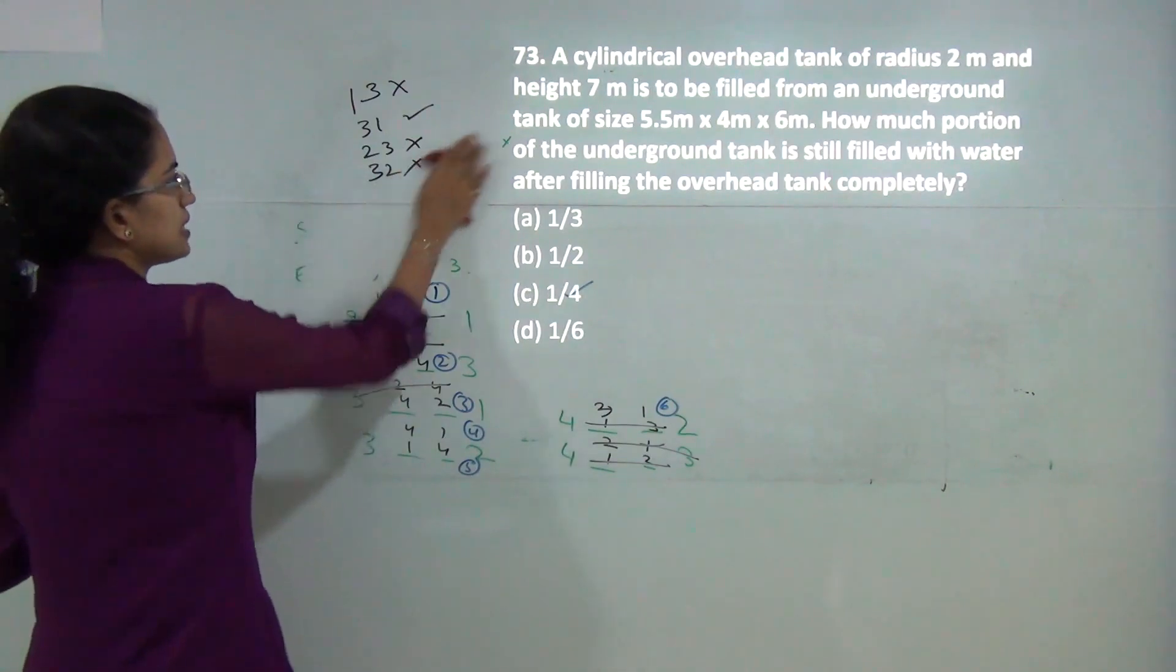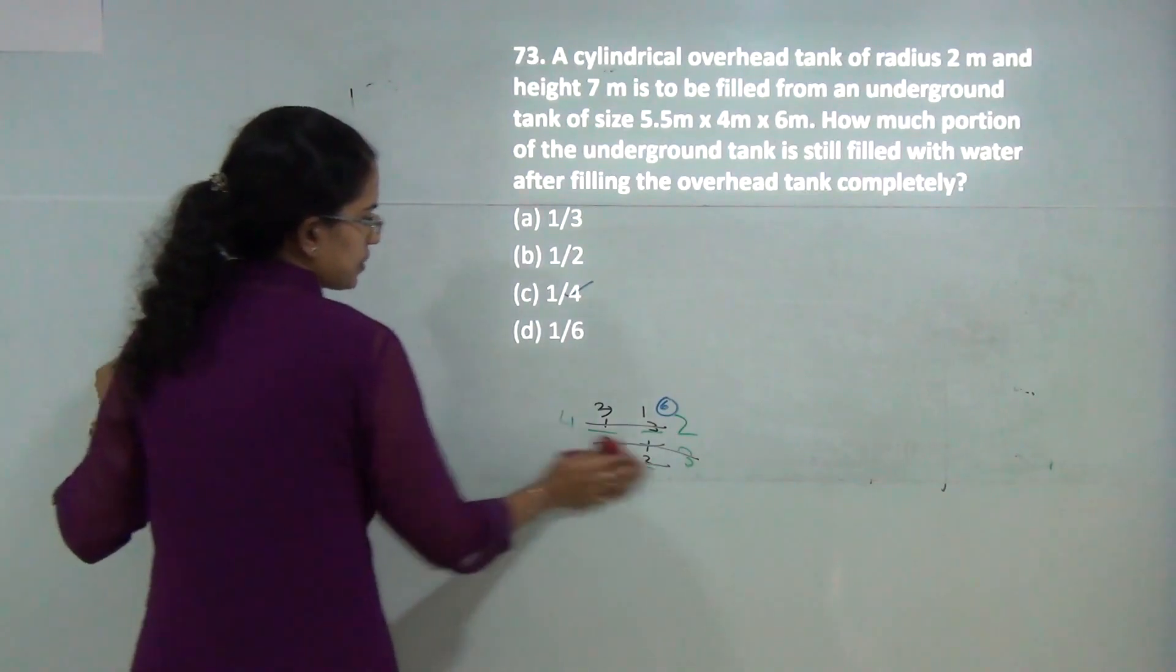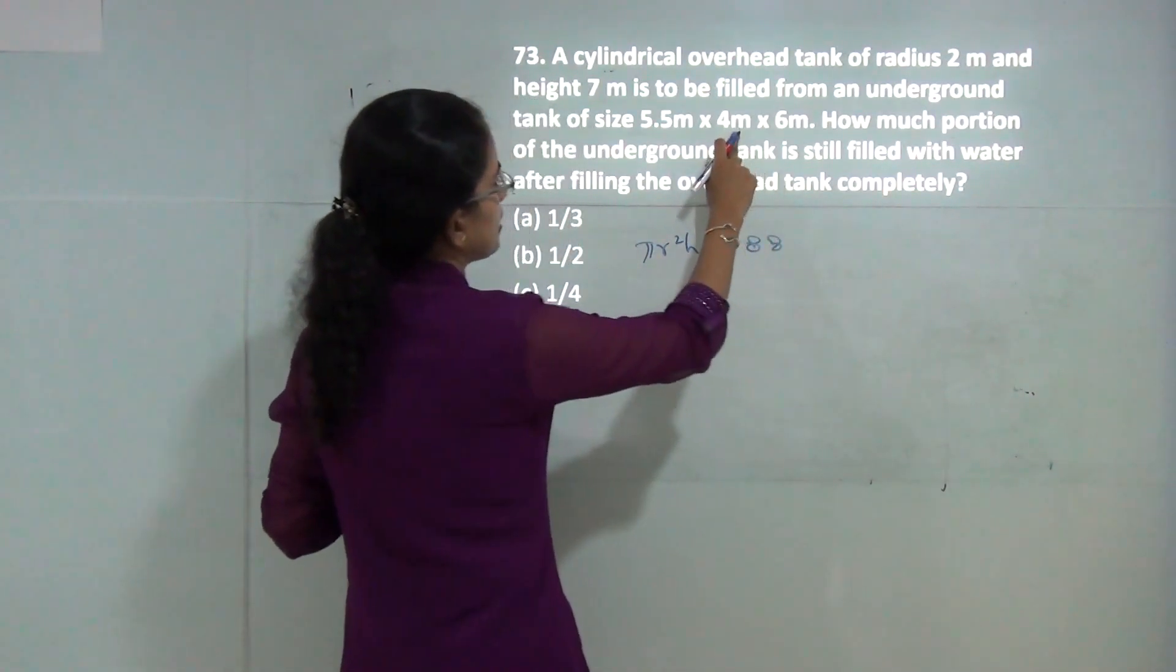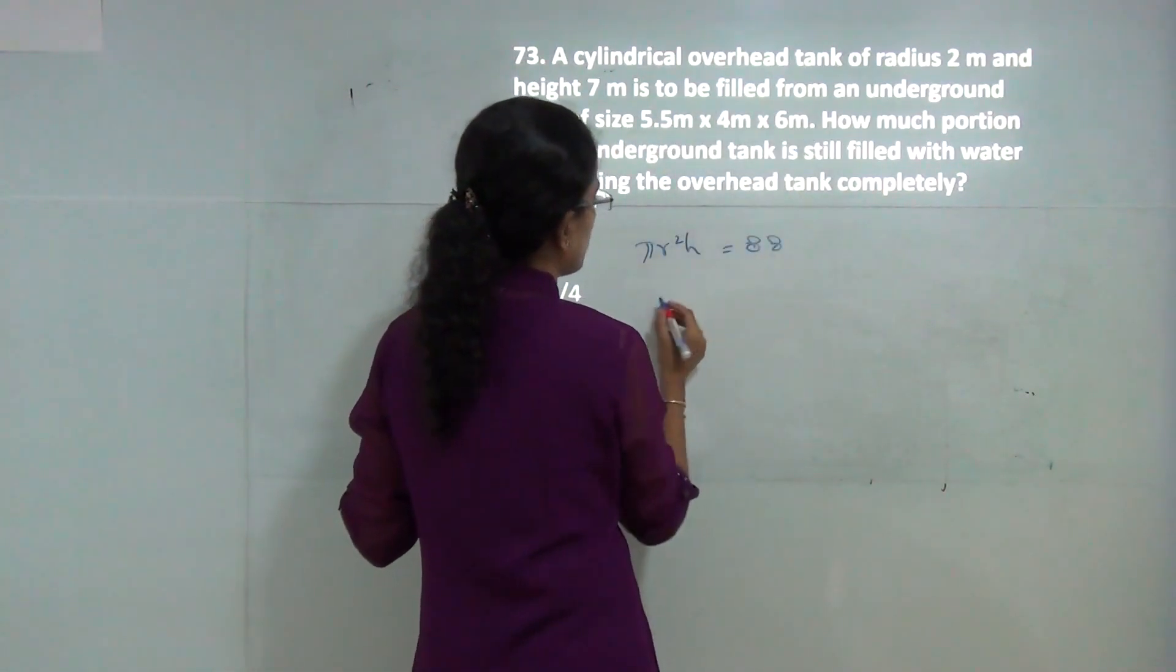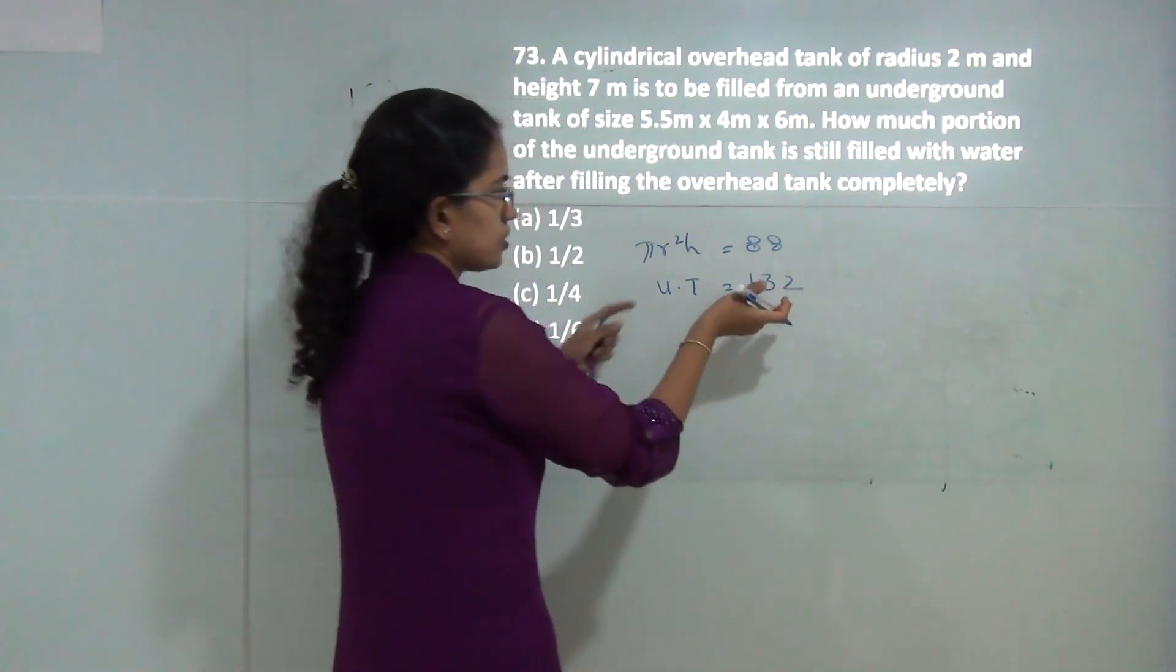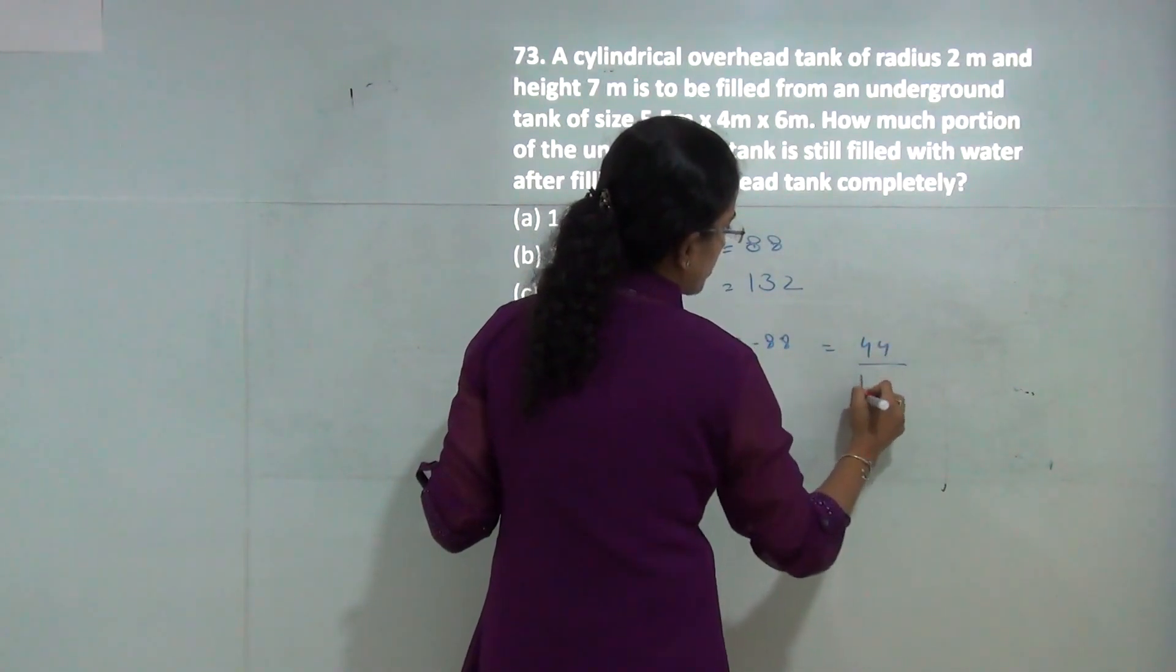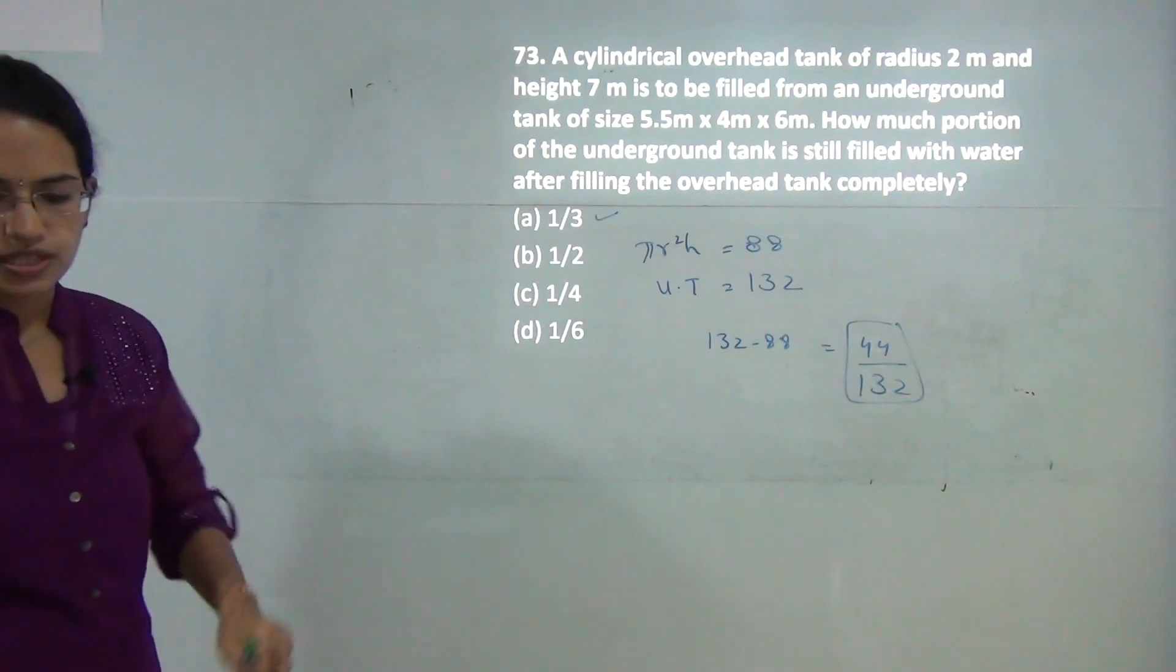You have a cylindrical overhead tank. The volume of the overhead tank is pi r squared h, which equals 88. The underground tank volume is 132. Since 88 went into the overhead tank, 132 minus 88 equals 44 remains, which is one third of the total capacity.